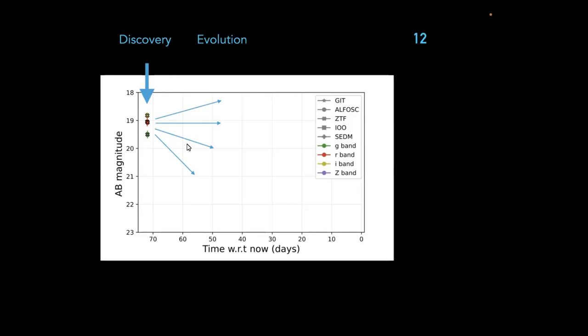Take the kilonova as an example — it rises very fast and decays very rapidly. A survey telescope covering the sky in three nights means between those nights you can't go back to a candidate for more data. Sometimes you don't want to wait three days — the transient might have faded completely and never pop up again.